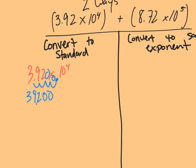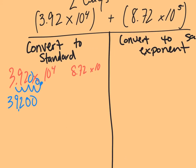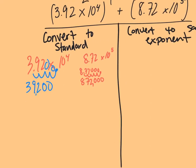Then my other number was 8.72 times 10 to the fifth. And so now when I convert that, I'm going to start at 8.72 and move one spot, two spots, three spots, four spots, five spots, filling in zeros. So I end up with 872,000.